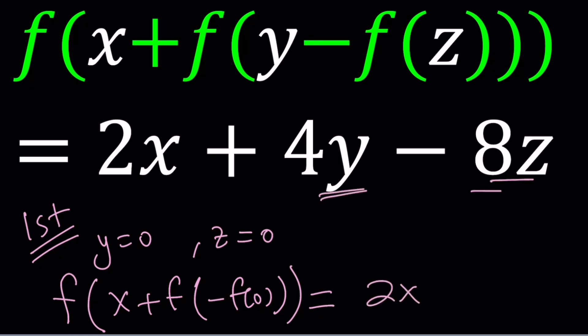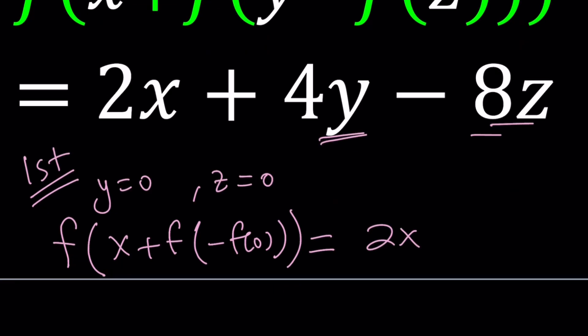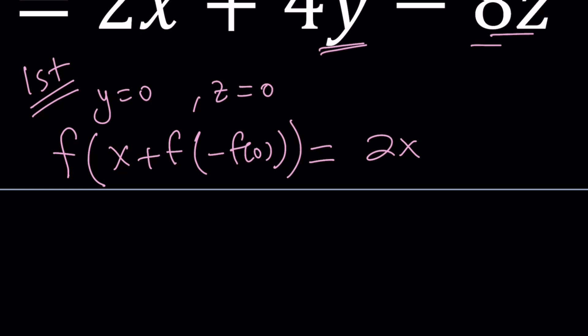Which is kind of interesting, right? The whole expression kind of collapses into a single variable thing. Now, here's what we're going to do. We only have x on the right-hand side. And inside the parentheses here, we only have x as our variable. First of all, notice that this expression right here is a constant because f of 0 is constant. Its opposite is a constant and f of that is a constant. So we can basically call this c, c being f of negative f of 0. So we get f of x plus c equals 2x.